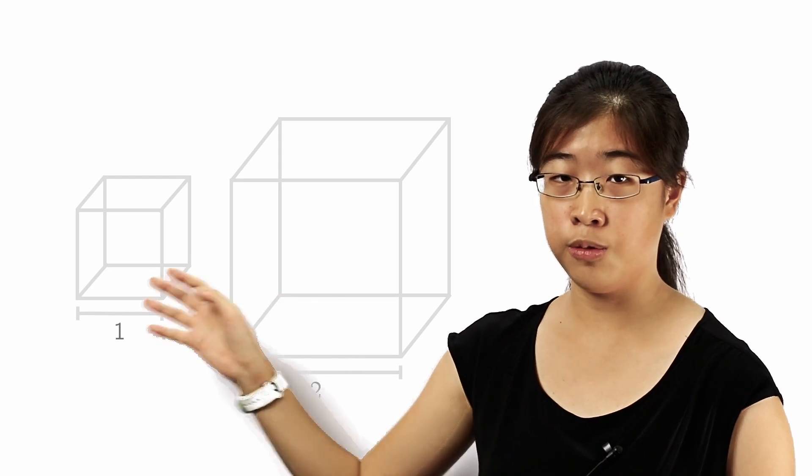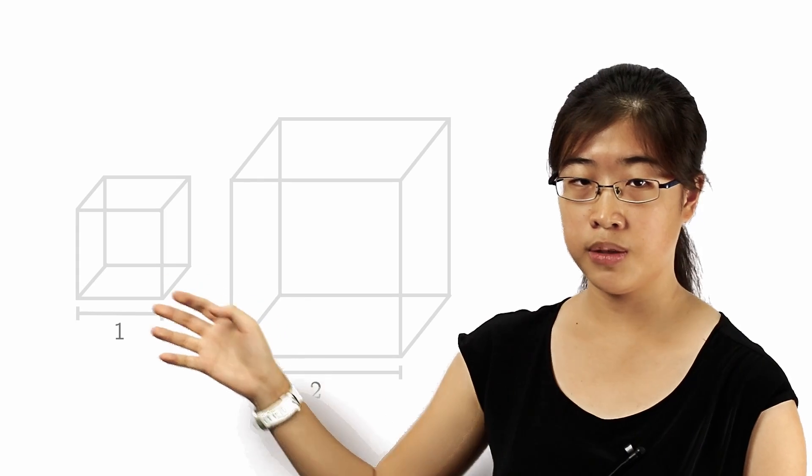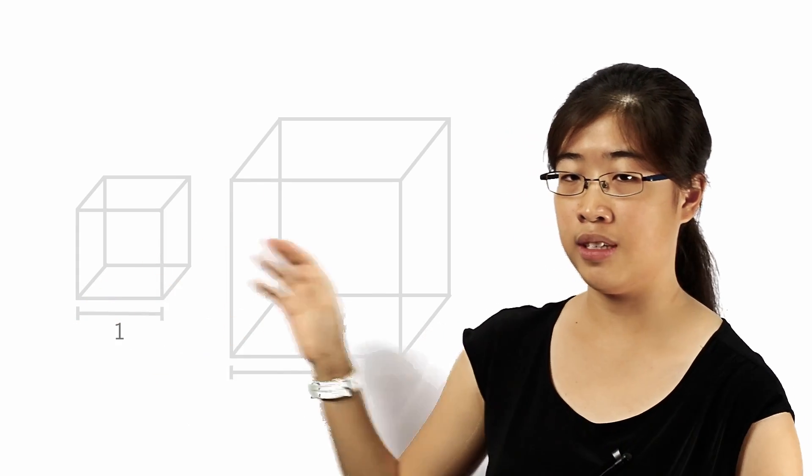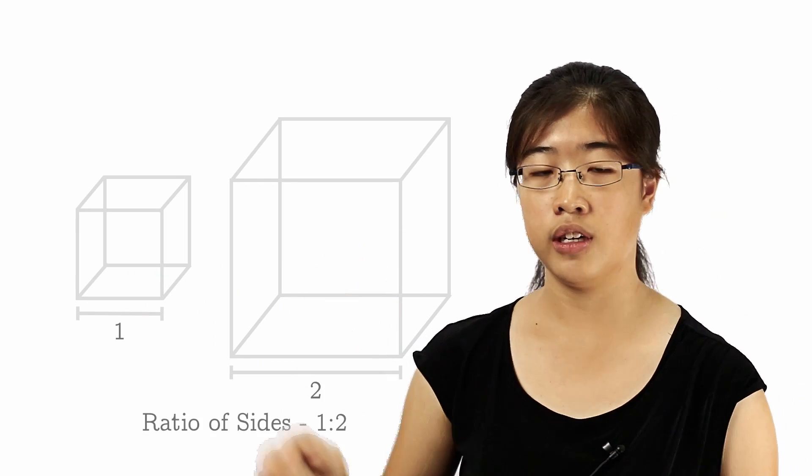So take a look at these two cubes. Obviously they are of the same shape, so we know that they are similar solids. The smaller cube has side lengths of 1, while the larger cube has side lengths of 2. So the ratio of their corresponding length is 1 is to 2.